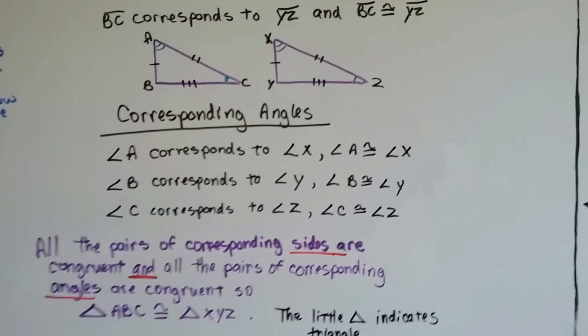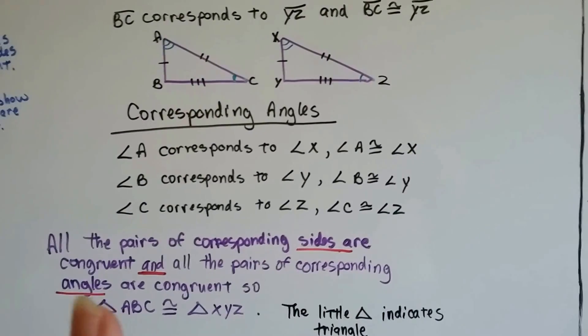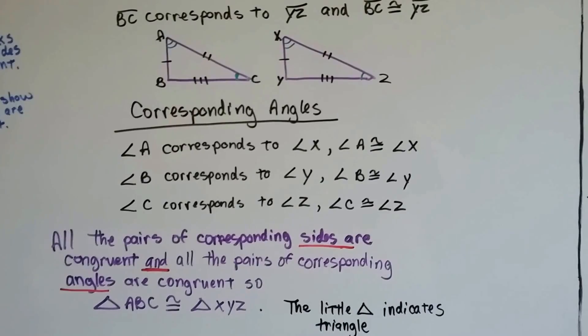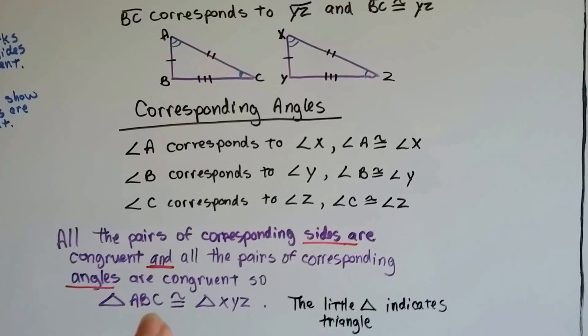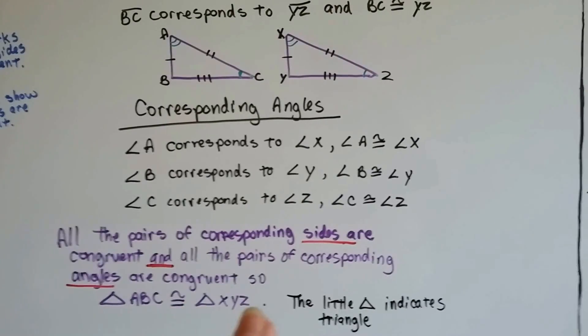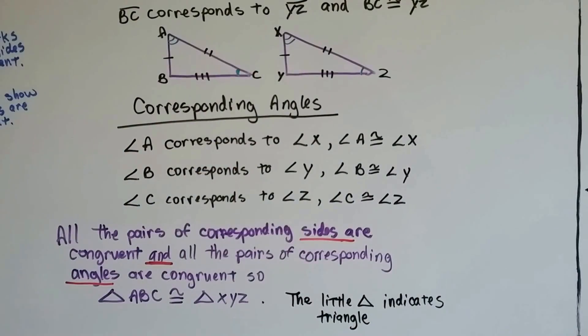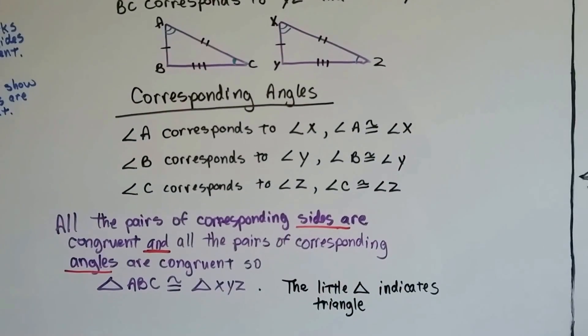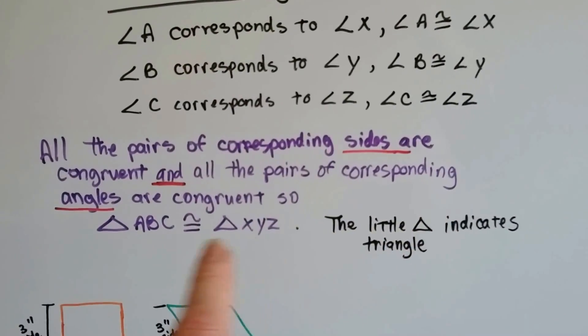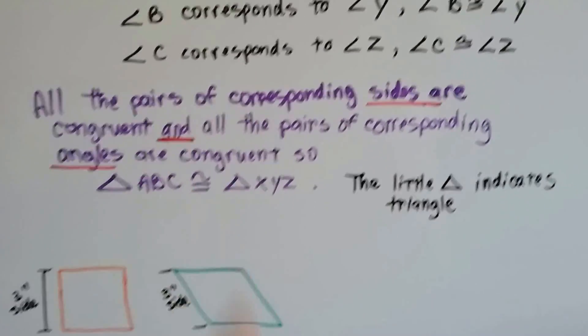So all the pairs of corresponding sides are congruent and the pairs of corresponding angles are congruent. So triangle ABC is congruent to triangle XYZ. All the sides and all the angles are congruent, so these two triangles are congruent. Just remember the little triangle indicates that they're triangles.